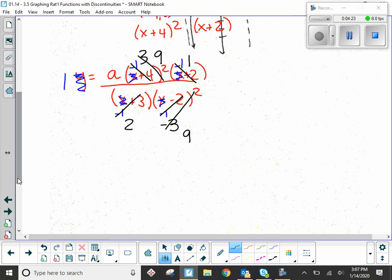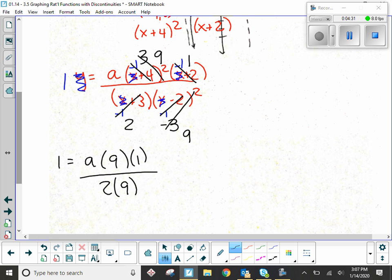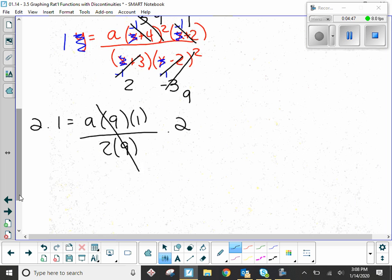So here's what we've got. 1 equals a times 9 times 1 over 2 times 9. You are welcome to multiply those together and get 18 on the bottom and 9 on top. You're also welcome to just cancel the 9s right here. That would leave you a over 2. And then what would you multiply both sides by? Whatever's in your denominator. And you get 2 equals a. And you're done.